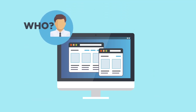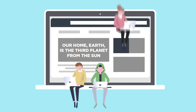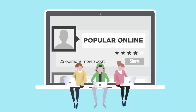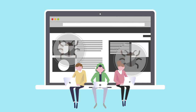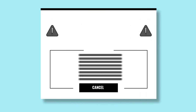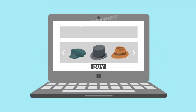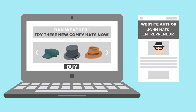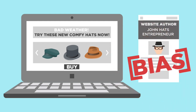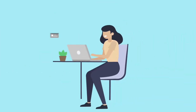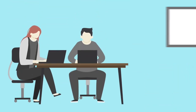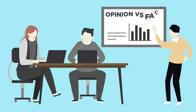First, think about who published the information and why. While some publishers want to share factual information online, others are interested in making money, becoming popular online, spreading their personal beliefs, or even spreading viruses to damage other people's computers. Avoid relying on information from biased sources. For example, if you find an article stating that everyone should purchase hats because the weather is getting worse, and the author is a company that sells hats, it is likely the publisher is sharing biased information. Bias isn't always bad — personal bloggers may present valuable information. However, you should be aware of any author's bias and know when something is opinion versus fact.